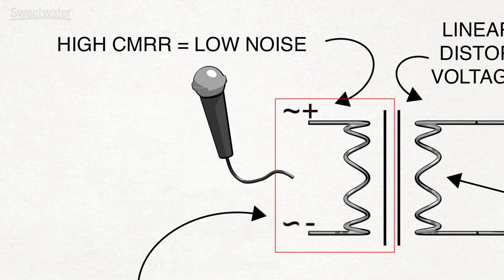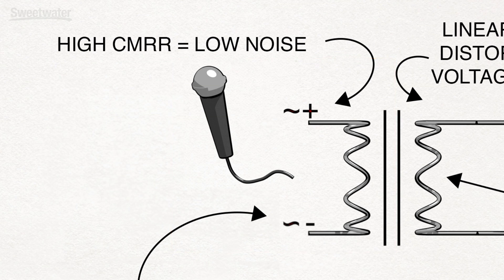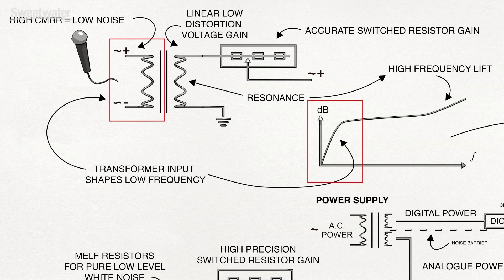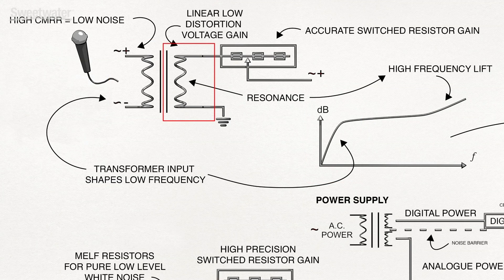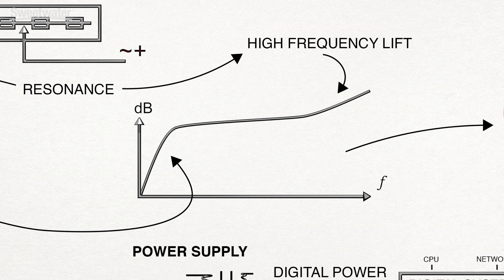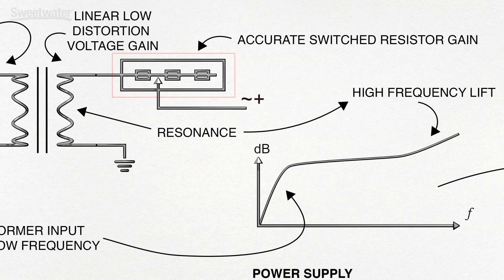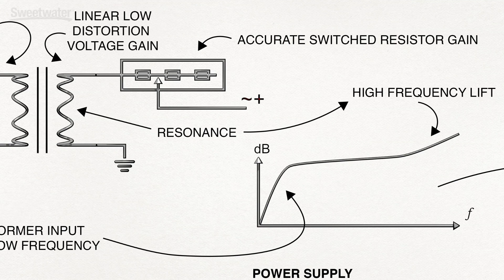Let's start with the original Red Transformer and look to see where its sound quality comes from. The input primary winding delivers high common mode rejection ratio for low noise microphone recording. Specific input impedance alters the way the microphone sounds, shaping a tight low-end frequency response. The secondary output windings deliver very linear low distortion voltage gain for transparent sound. Transformer resonance acts as a passive frequency shaper, adding a high frequency lift. The unique combination of input impedance and resonance creates the effect our customers describe as air. Finally, a stepped resistor ladder accurately adds additional gain in 6 dB steps.